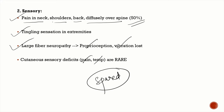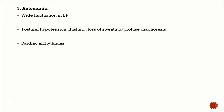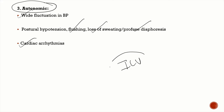Autonomic features are very pronounced in GBS. These include wide fluctuations in blood pressure with sudden hypertension, flushing, loss of sweating or profuse sweating, and cardiac arrhythmias. Because these fluctuations in heart rate and BP occur very rapidly — over minutes — patients must be monitored in an ICU.